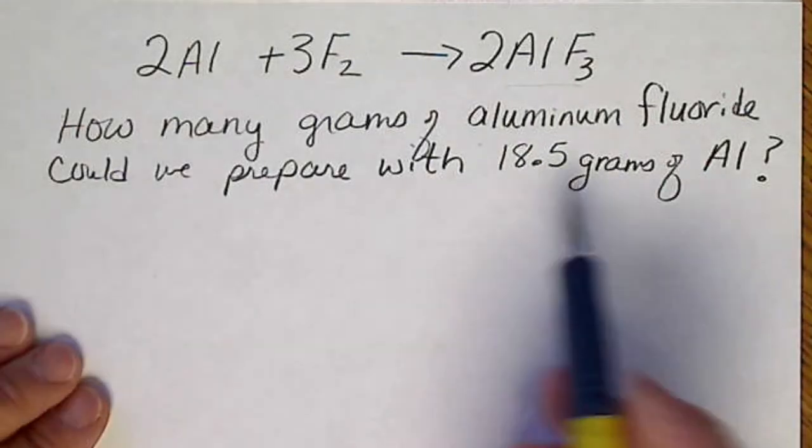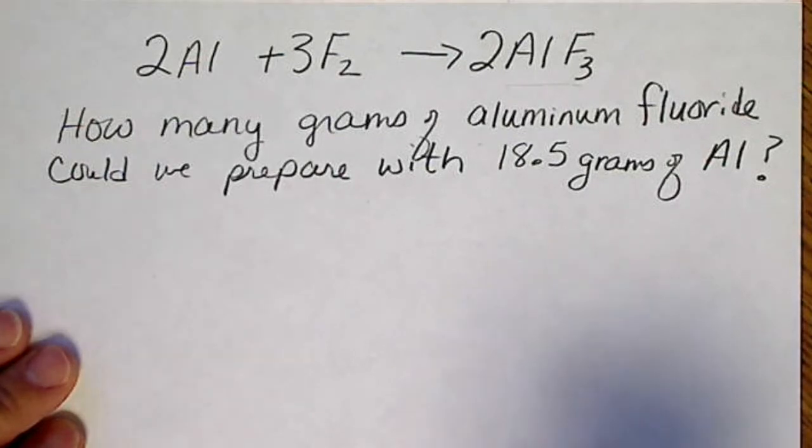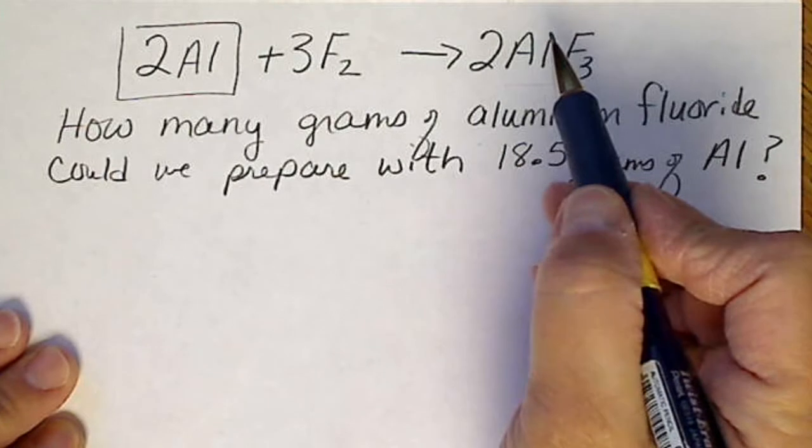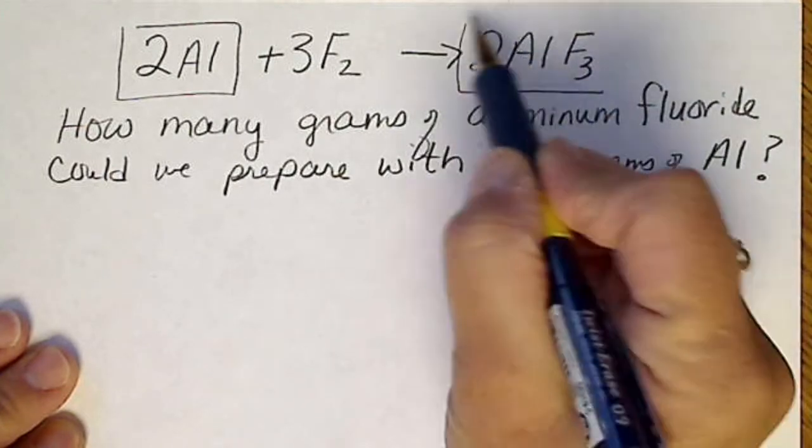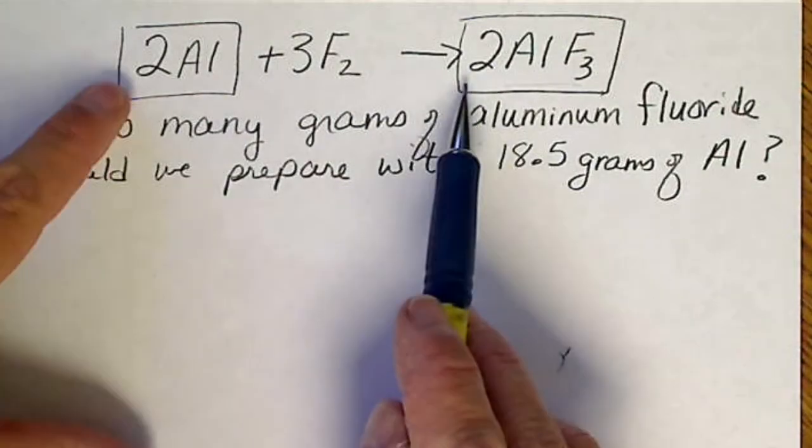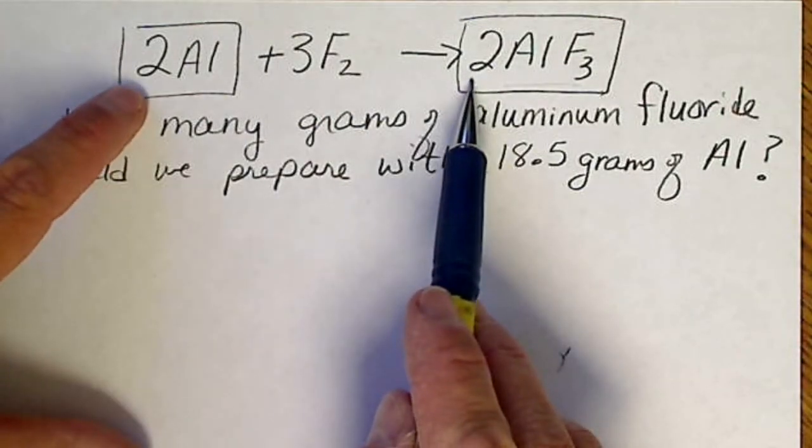In this case, the only two things in the balanced equation that we need are aluminum and aluminum fluoride. And we can see right away from the balanced equation that these two are equal.